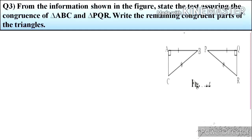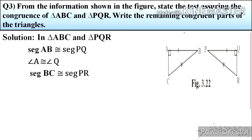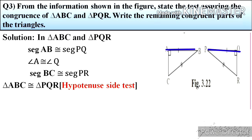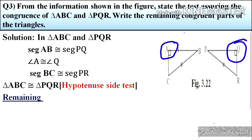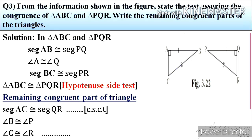Question 3: From the information shown in the figure, state a test assuring the congruence of triangle ABC and triangle PQR, and write the remaining congruent parts. In triangle ABC and triangle PQR with identical marking: segment AB is congruent to segment PQ, angle A is congruent to angle Q, and segment BC is congruent to segment PR. Therefore, triangle ABC is congruent to triangle PQR by Hypotenuse Side test. The remaining congruent parts: segment AC is congruent to segment QR by CSCT.